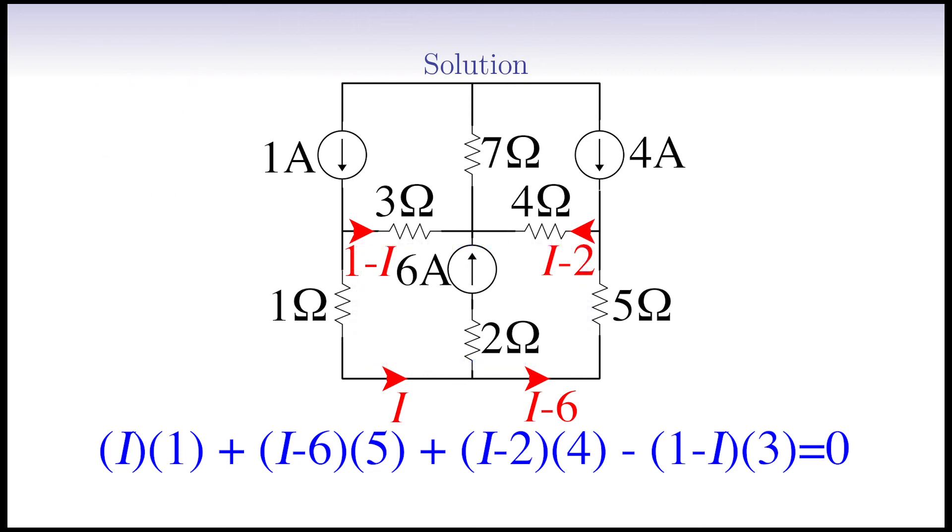Great! Now, we collect the unknown terms which contain I. In the first term we have 1 I, in the second 5 I, and in the third 4 I, which add up to 10 I. In the last term, we have minus negative 3 I, which gives plus 3 I. So all together, we get 13 I. And collecting the known terms gives minus 30, minus 8, minus 3. So we get minus 41. Thus, the equation for I simplifies to 13 I minus 41 equals 0.